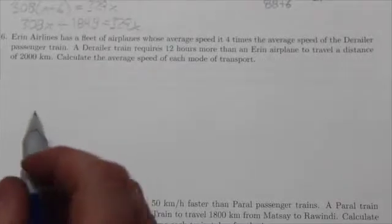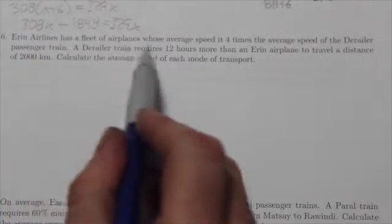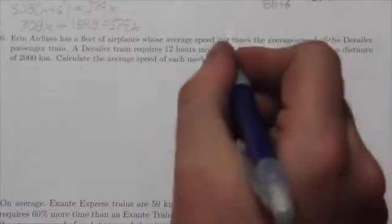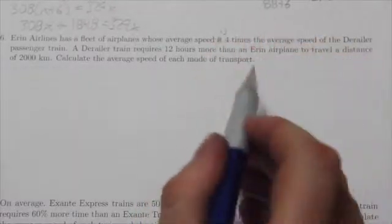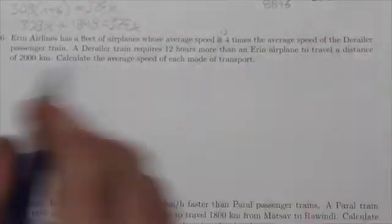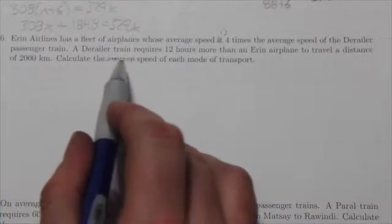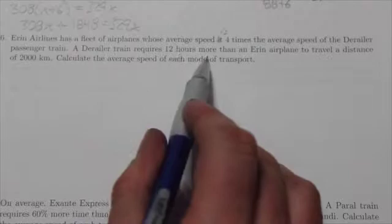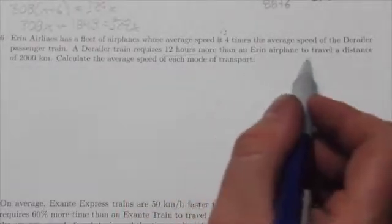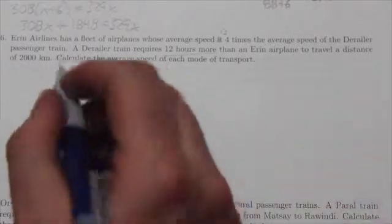Question 16. Aaron Airlines has a fleet of airplanes whose average speed is four times the average speed of the Derailleur passenger train. A Derailleur train requires 12 hours more than the Aaron airplane to travel a distance of 2,000 kilometers. Calculate the average speed of each mode of transportation.